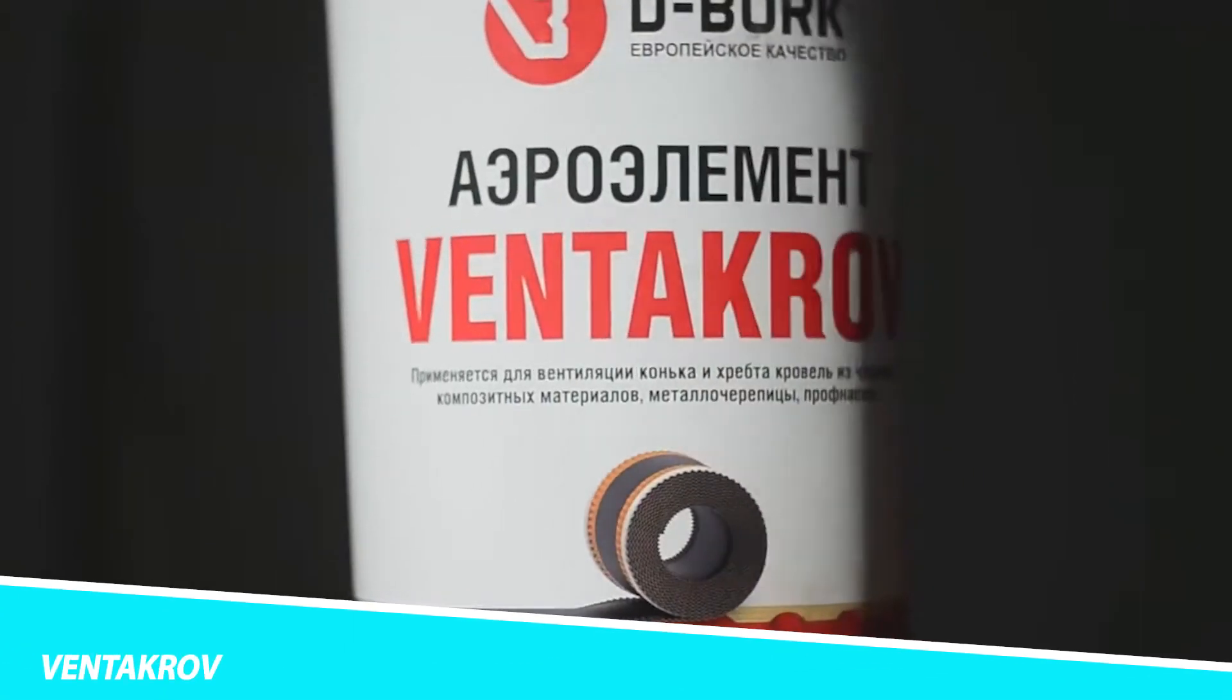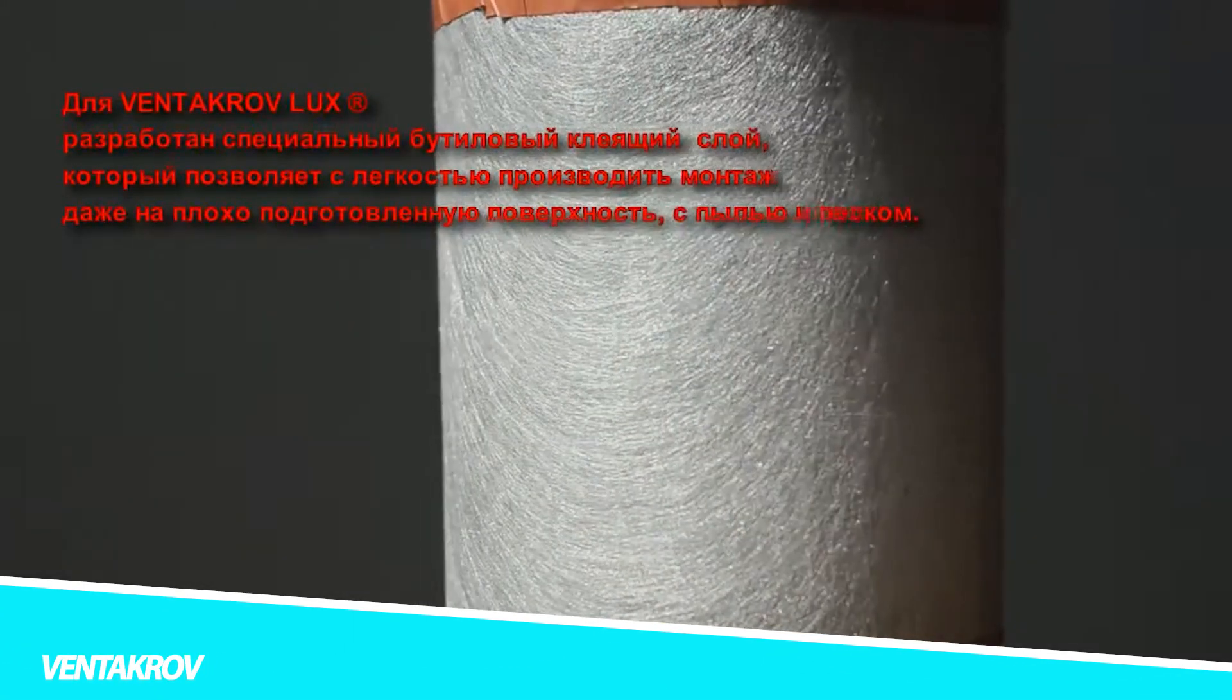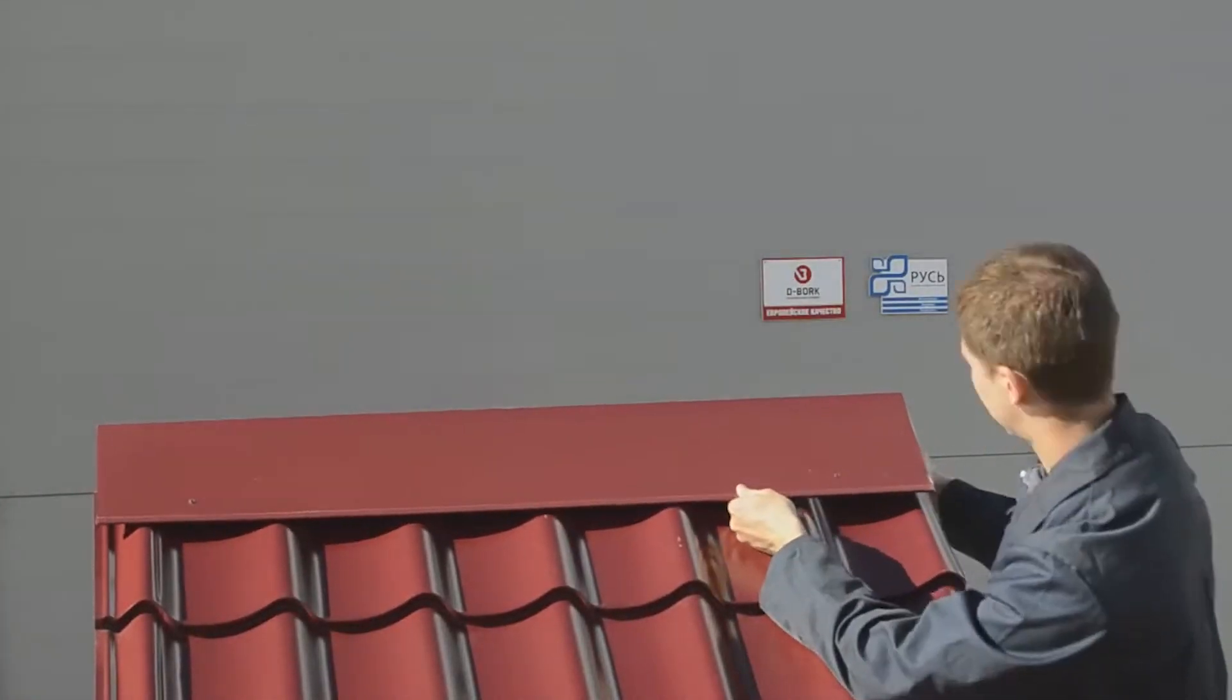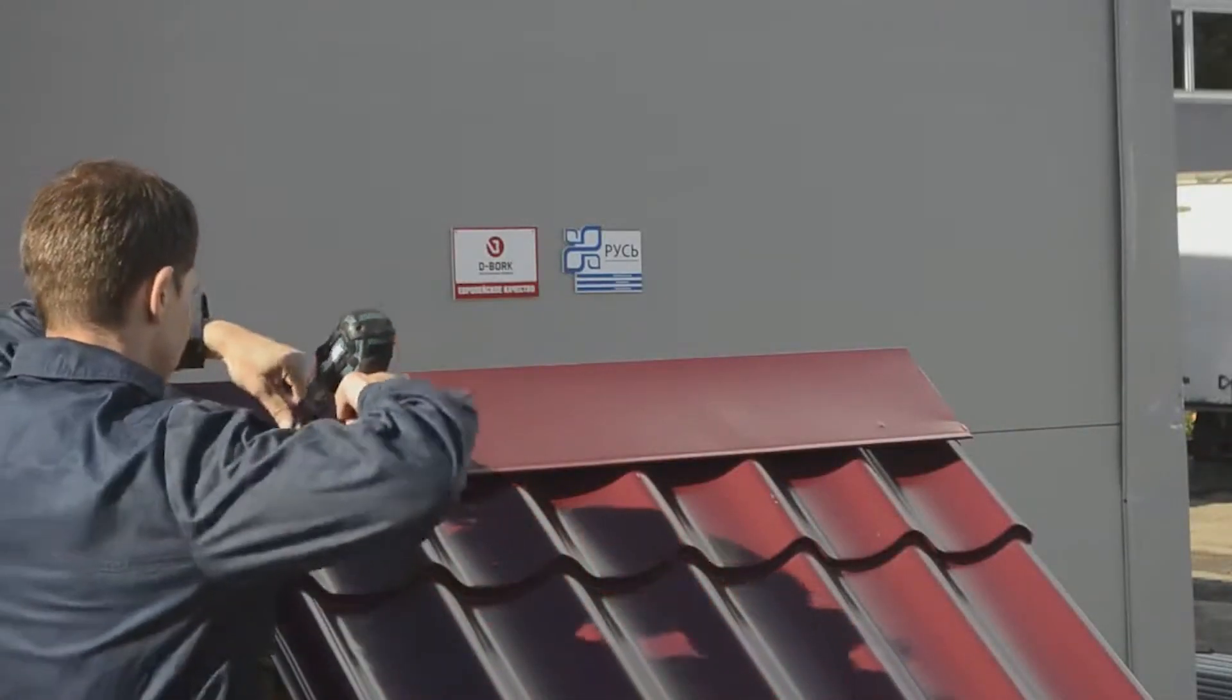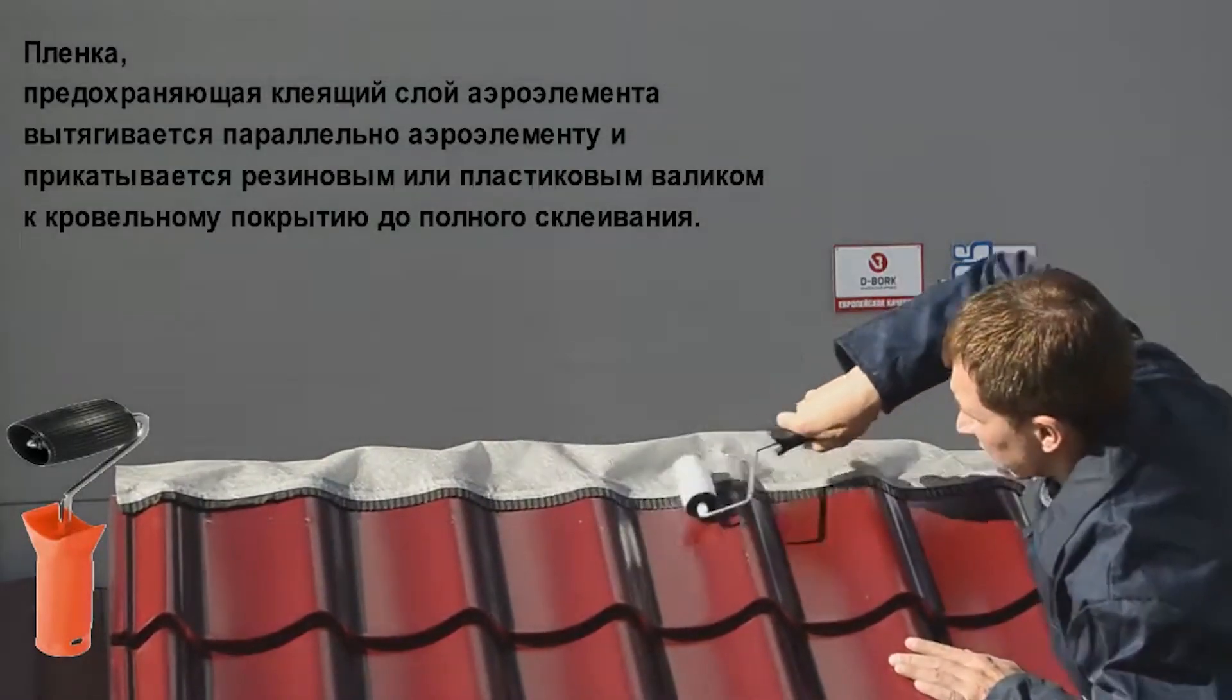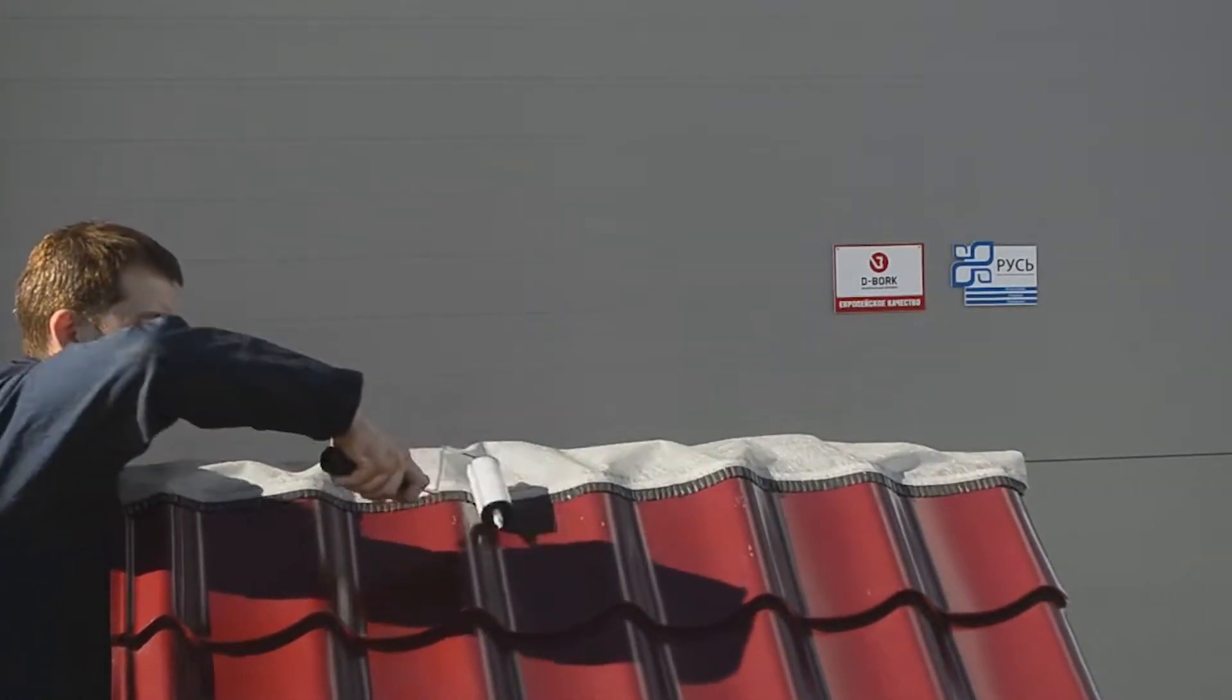Ventacroft is a roofing system that combines the benefits of traditional tile roofs with the latest ventilation technology. It consists of a special type of clay or concrete tile that is designed to interlock with adjacent tiles, creating a watertight seal that prevents leaks and provides excellent insulation.